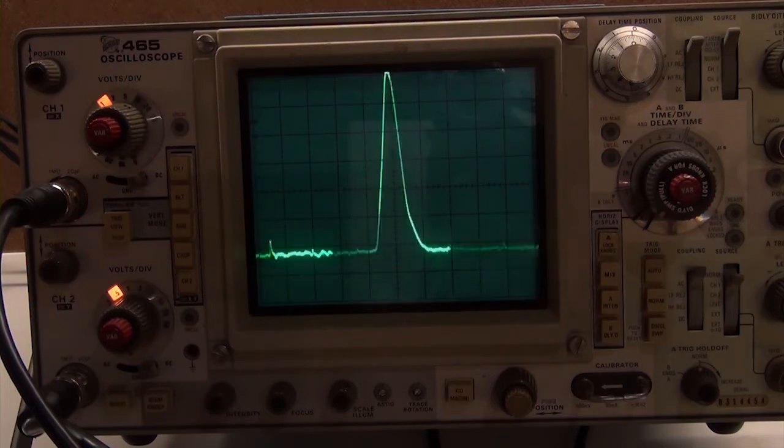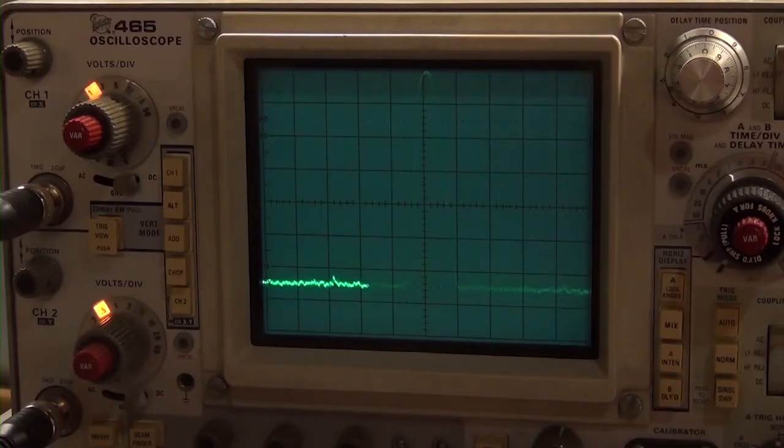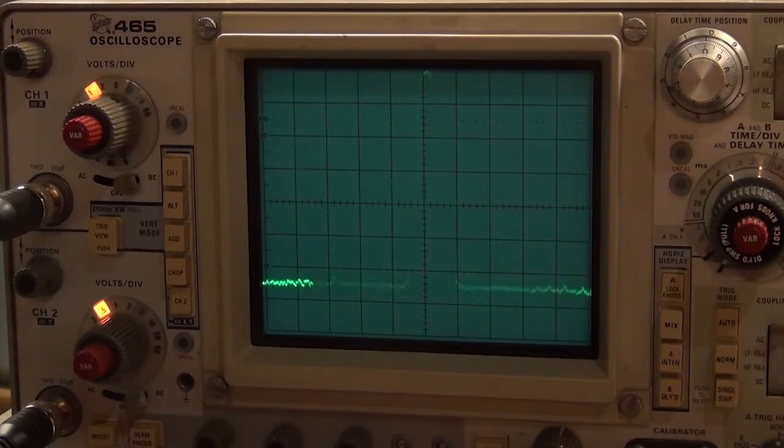And, as an unexpected bonus, the skirts of the response are more symmetrical. Perhaps the Murata ceramic filter is more balanced than the prior discrete component filter. That's just a guess, but in any case, I'll take it.